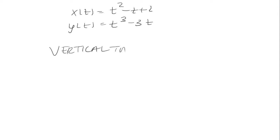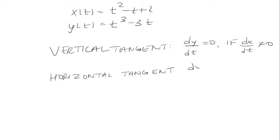So for the vertical tangent we're going to set the derivative of y with respect to t equal to zero provided that dx over dt is not equal to zero. And then for the horizontal tangent it's going to be the opposite. So we're going to set the derivative of x with respect to t equal to zero provided that the derivative of y with respect to t is not equal to zero.